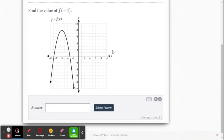F of negative 4. All right. So input is x is negative 4. What's the output? The y value is 4, positive 4.